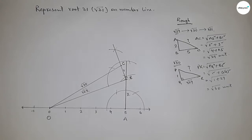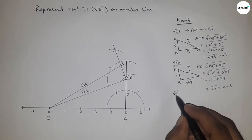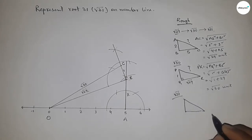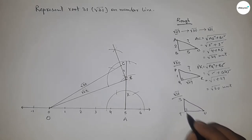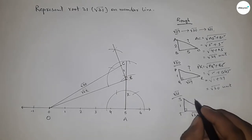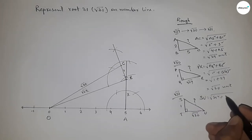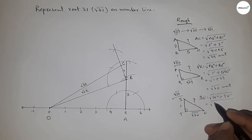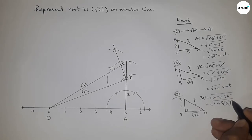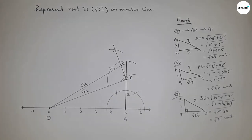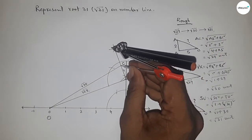Next we represent root 31. If there is a right-angle triangle STU with base root 30 and height 1, then by Pythagoras theorem, hypotenuse equals root over (1² + (√30)²) = root(1 + 30) = root 31 units. We will apply this concept at point C.